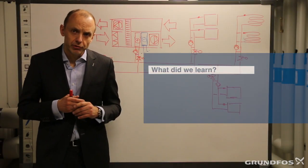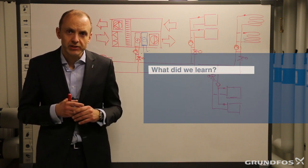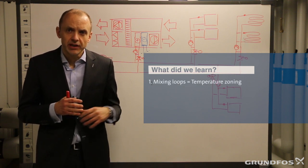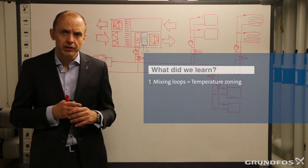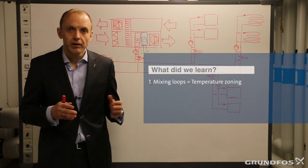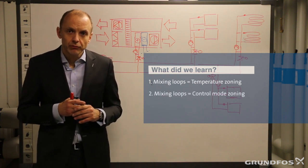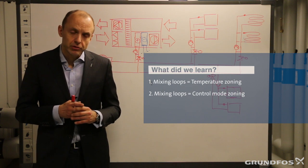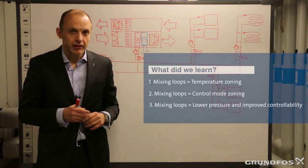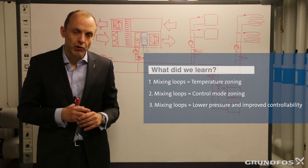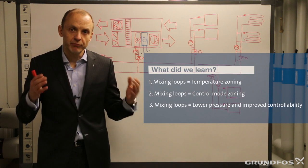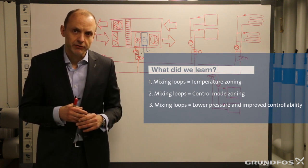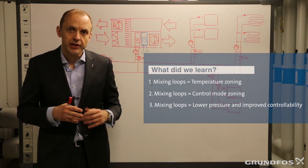So let's recap what we learned. Zoning of an HVAC system with mixing loops gives us a number of advantages. One is that we can run with different temperatures — we are not only dependent on the temperature provided by the boiler. Secondly, we can run with different control modes; every time we have a mixing loop, we can have a new control mode. Thirdly, with mixing loops we are able to reduce the overall differential pressure in the system because we have more pumps. That gives increased controllability of the whole system and saves us energy and money.